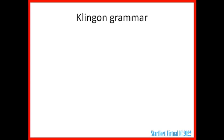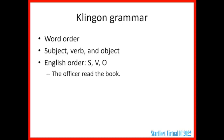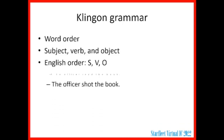Klingon also has its own grammar. You can't just take the Klingon dictionary and start flipping through it, looking up words, put them together in the same order as they would be in English, and have a correct Klingon sentence. To talk about grammar we're going to talk a little about subjects, verbs, and objects. In English, we put the three in this order. If you have a sentence like "the officer shot the book" — officer is the subject, that's the person who's doing things; the verb is what they're doing; and the object is what gets it done to. So the officer is the subject, shot is the verb, and book is the object.